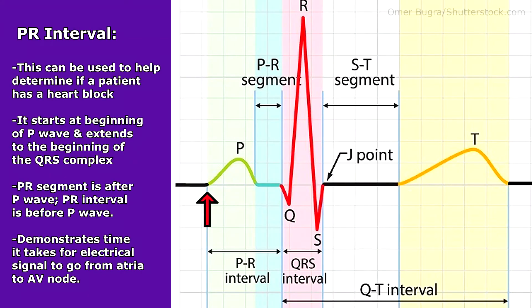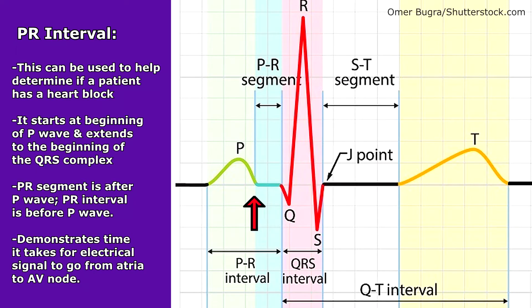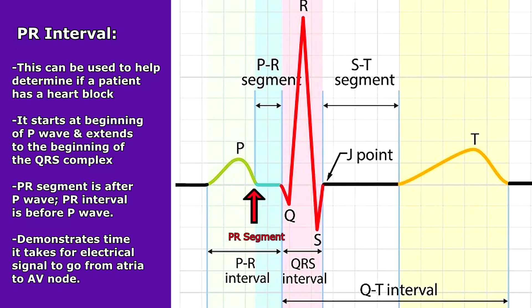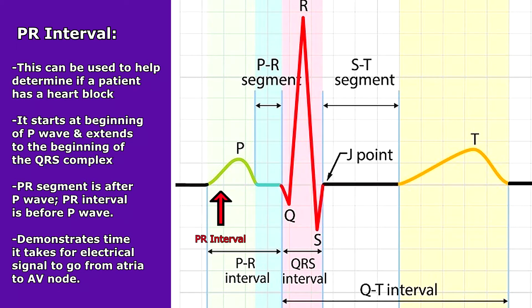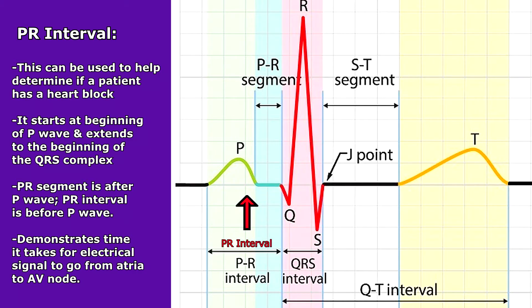The PR interval starts at the beginning of the P wave and extends to the beginning of the QRS complex. It's different than the PR segment — the PR segment was after the P wave, whereas the PR interval goes from before the P wave to the beginning of the QRS complex. This demonstrates the amount of time it takes for the electrical signal to go from the atria to the AV node.